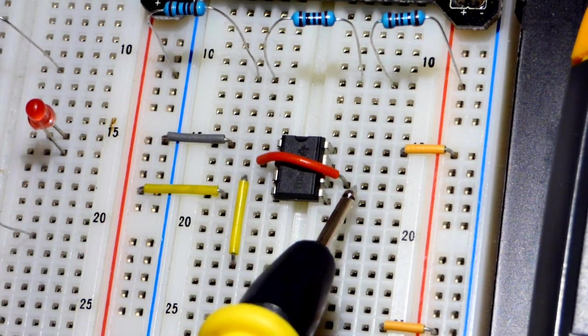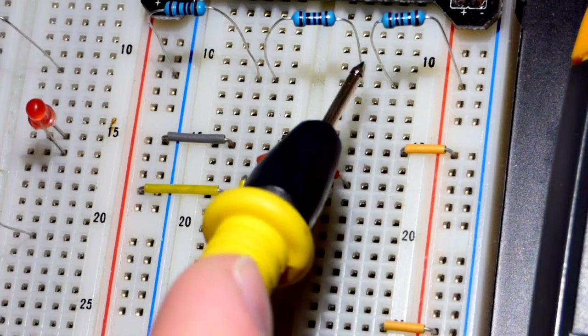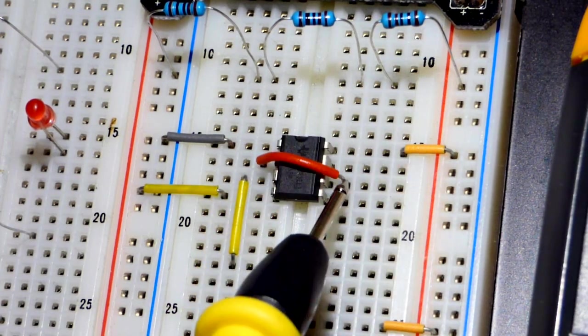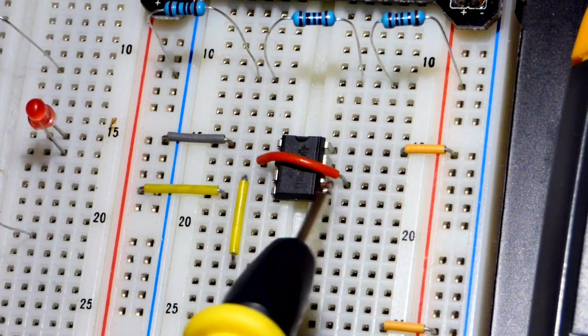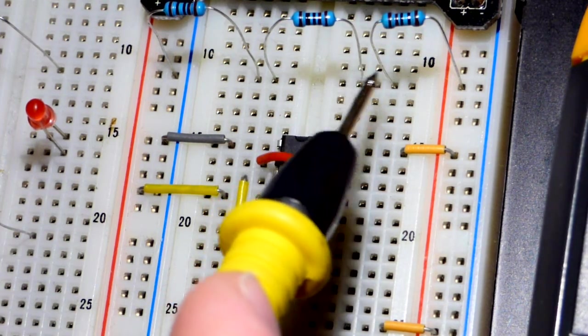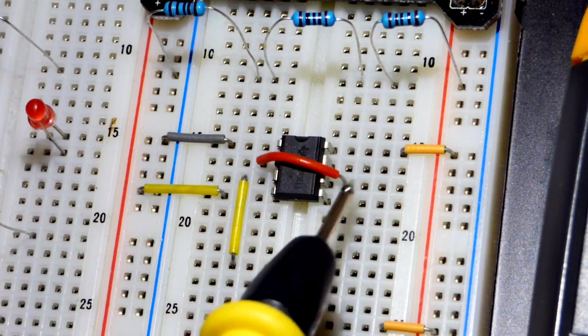And the threshold pin monitors for the two thirds voltage and it jumps into action and sets the output low when we get up to two thirds of the power supply voltage to that pin.